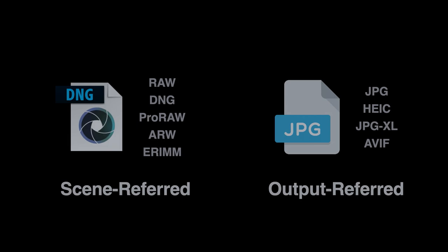Scene-referred holds the captured scene—the physics of the scene as the camera captured the range of the world. Output-referred holds what we want to display after the processing or compression that we've done to make the picture beautiful.